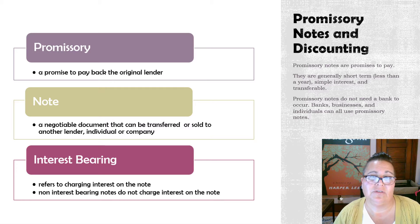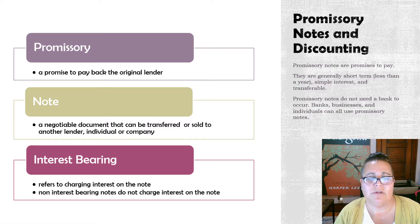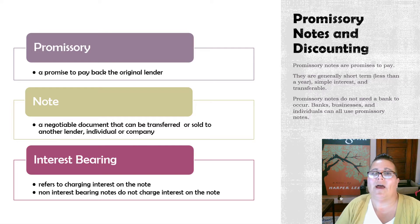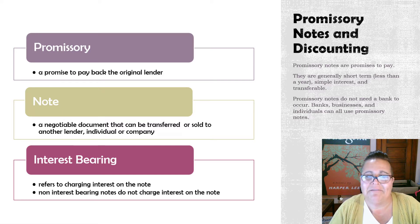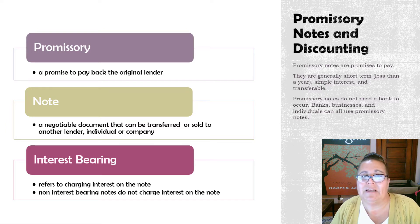The ones we're going to talk about are going to be interest bearing. You may have had to sign a promissory note if you've ever borrowed money from your parents. My mother is an accountant, so on a couple of occasions in college when my parents were lending me money, I signed promissory notes. Promissory notes do not need a bank — they can be done between businesses, between individuals, and anybody at all can use one. If you lend money to your best friend, you can offer them a promissory note.